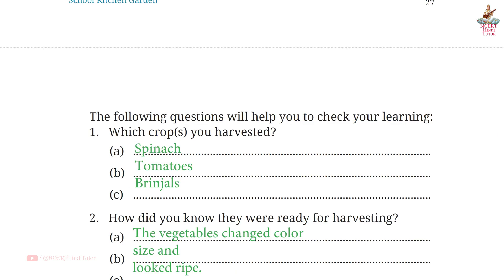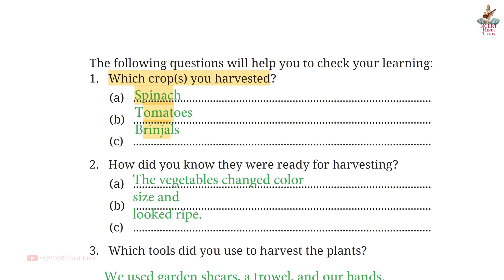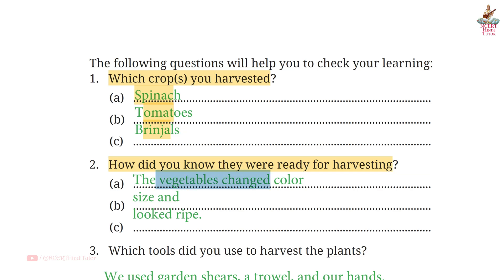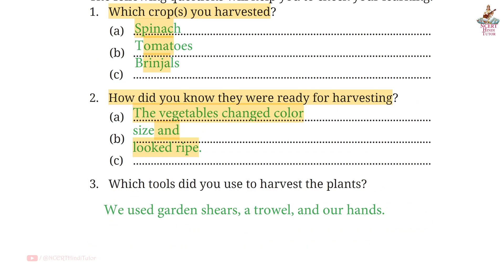Page 28, Question 1: Which crops did you harvest? Answer: Spinach, tomatoes, and brinjals. Question 2: How did you know they were ready for harvesting? Answer: The vegetables changed color, size, and looked ripe.